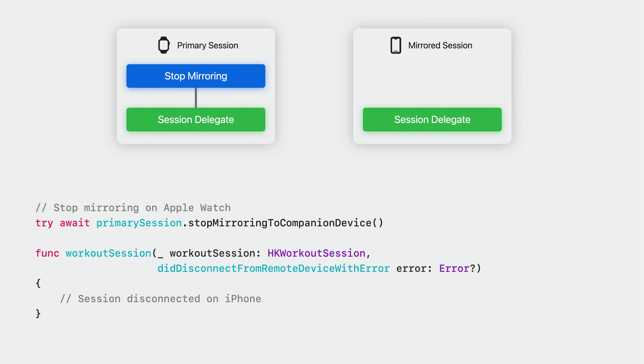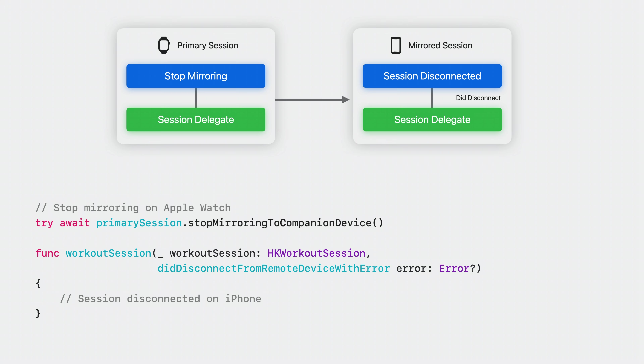Now I can stop mirroring the session anytime during the workout by calling the stop mirroring to companion device API. Calling this method will stop sending data to the companion device, and the mirrored session's did disconnect from remote device with error delegate method will be called. When I'm done cycling, I'll end the primary session and save it on the Apple Watch by finishing the builder. After saving the workout sample on Apple Watch, it syncs to my other devices and I can show the post-workout summary with more detailed charts and visualizations.